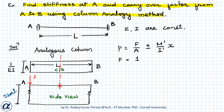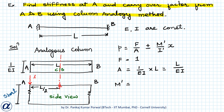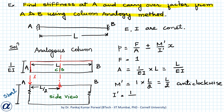F will be equal to 1 unit. A will be (1/EI) × L = L/EI. M' will be the moment due to the unit load; the lever arm is L/2, so M' = 1 × L/2 = L/2, in an anticlockwise sense. I' will be width × depth³/12 = (1/EI) × L³/12 = L³/(12EI).